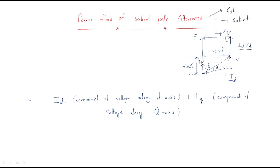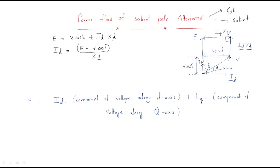For the exact 90 degrees we have another drop iq·xq, where iq is the quadrature axis current and xq is the quadrature axis reactance. The value of E is: E equals V cos δ plus id·xd. The total open circuit voltage is V cos δ plus id·xd. From this we can write the direct axis current: id = (E − V cos δ) / xd.